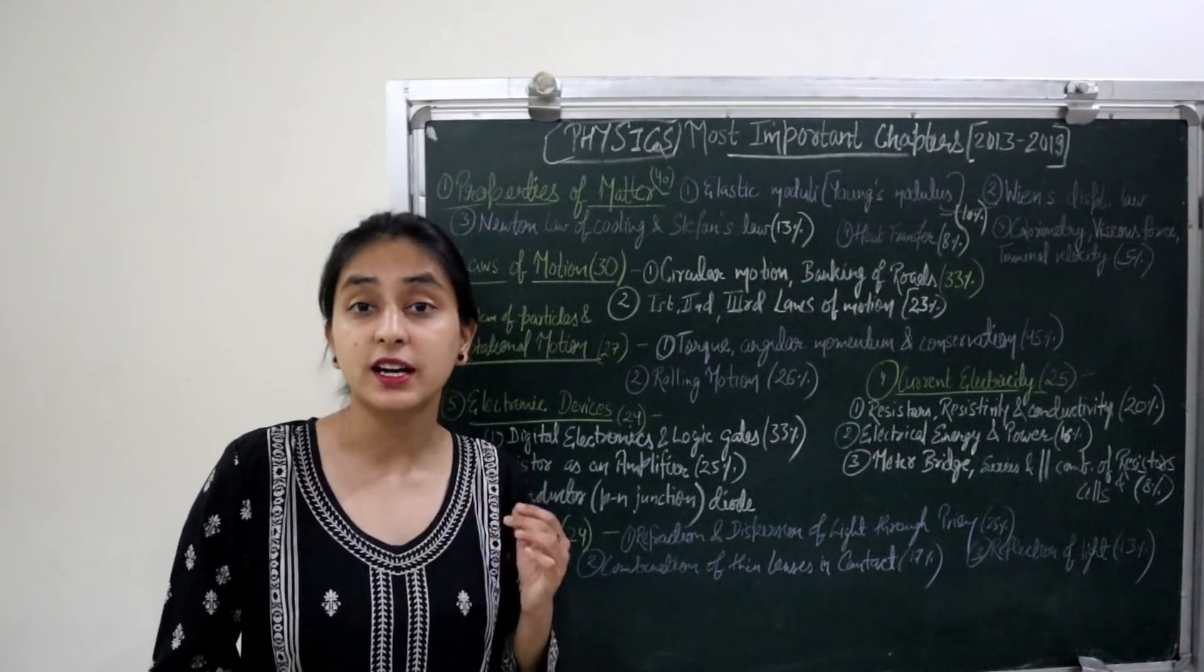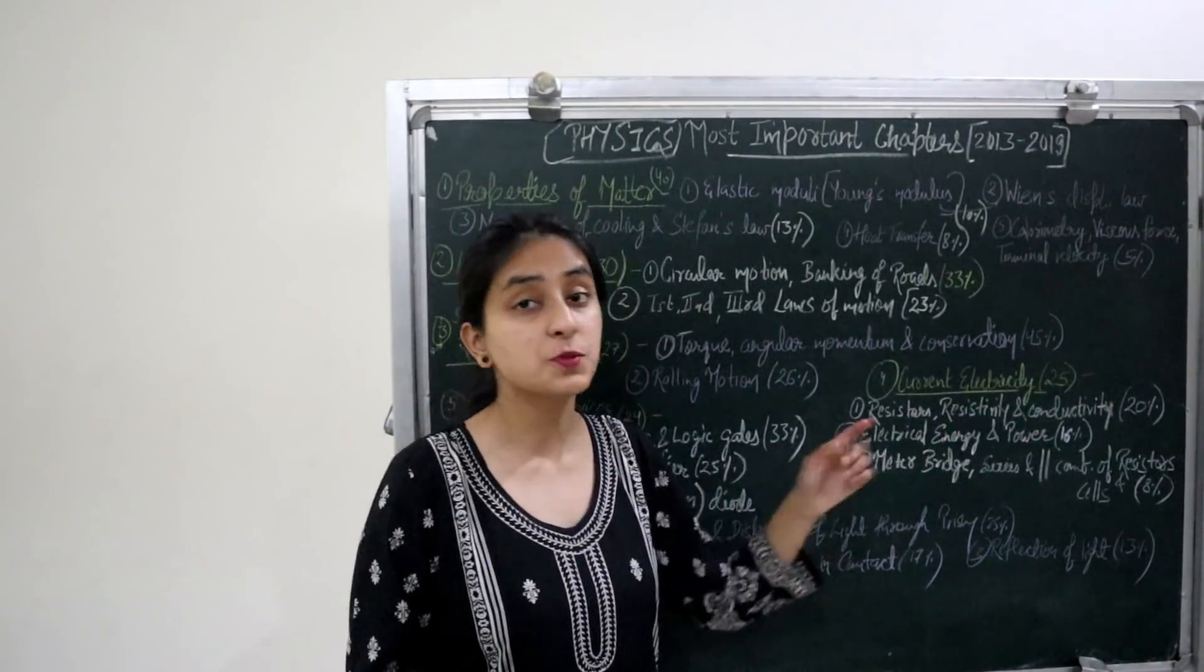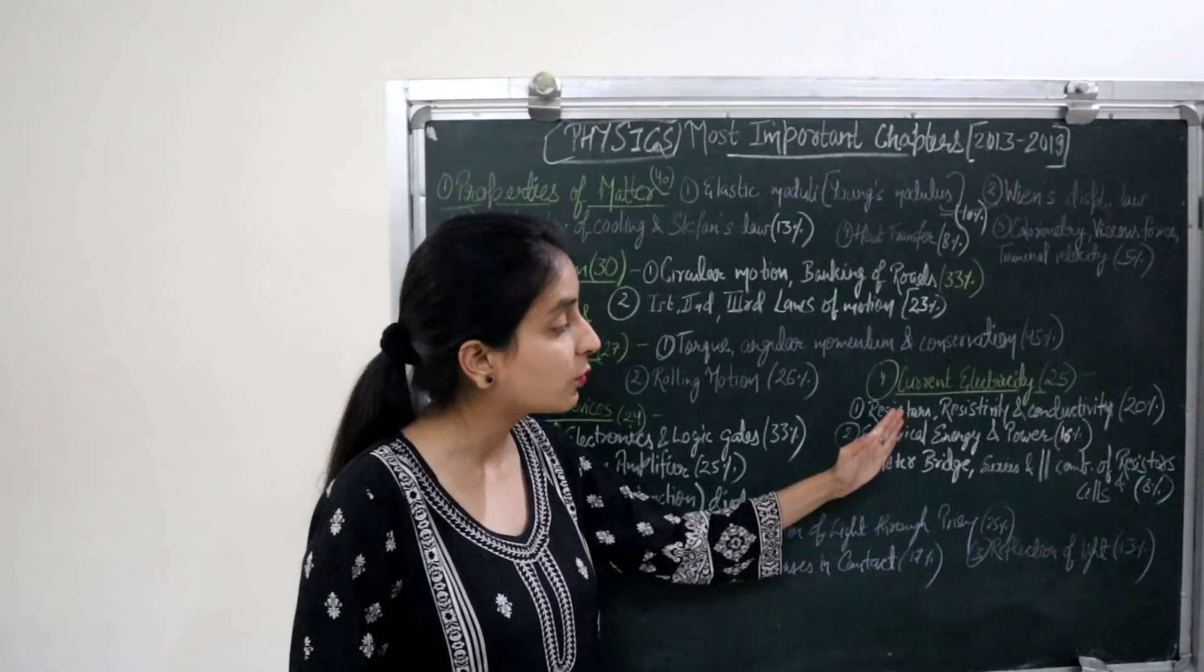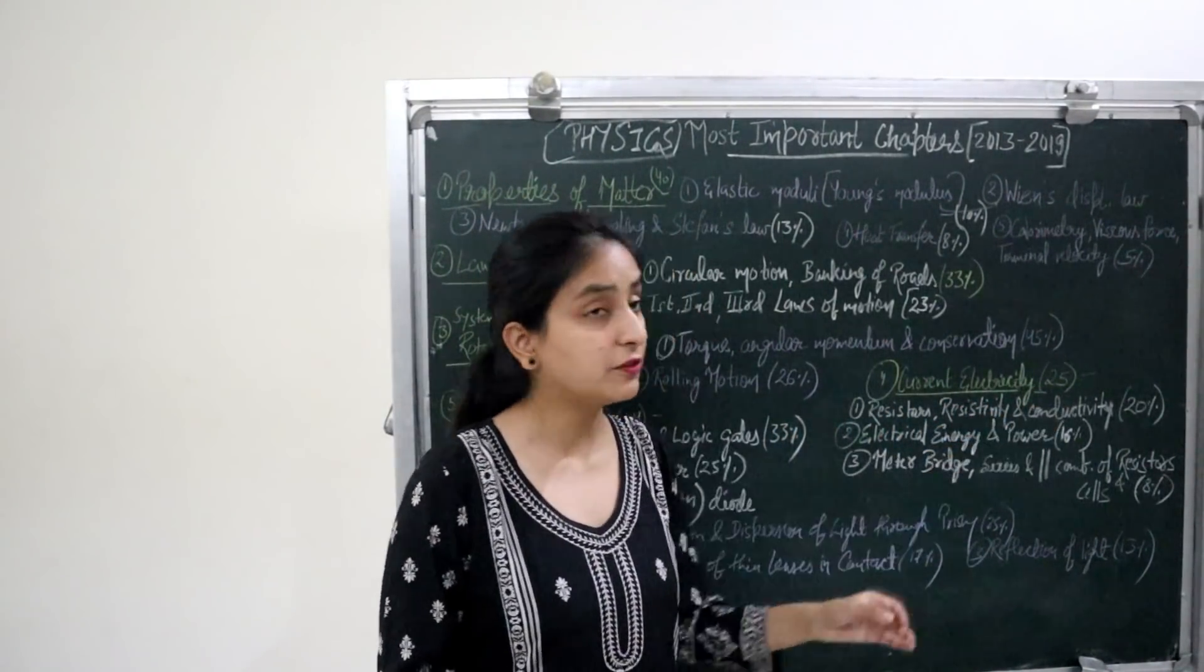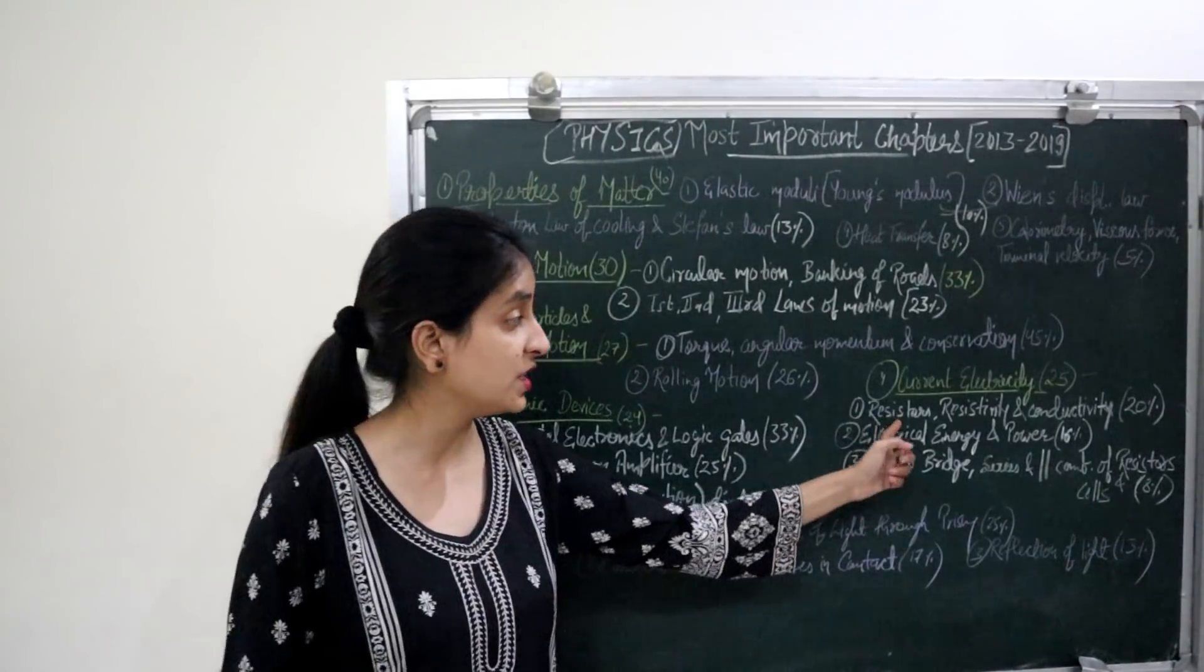Fourth most important chapter is Current Electricity. 25 questions in the past 7 years in this topic. Most important topics are Resistors, Resistivity and Conductivity. 20% questions from each of these topics.